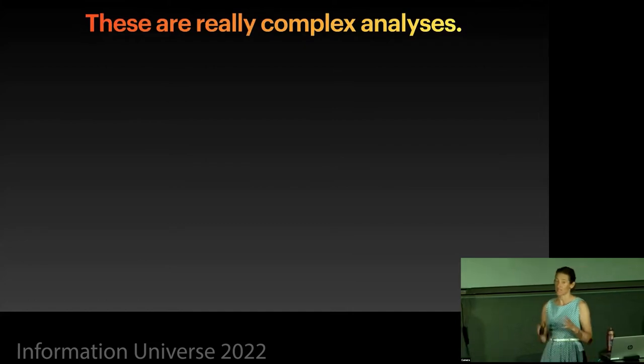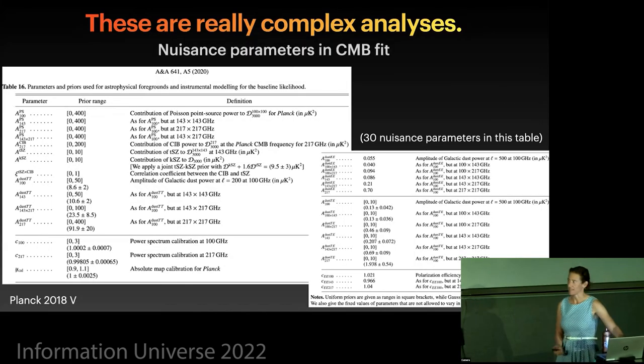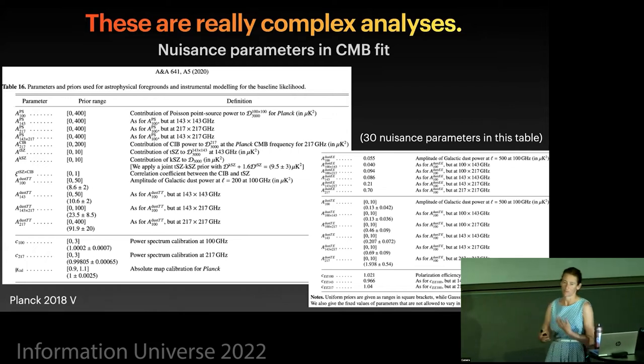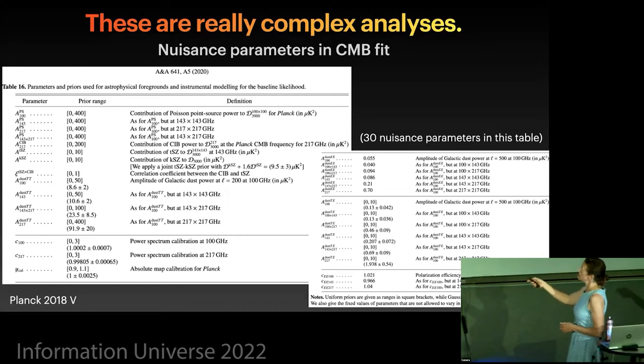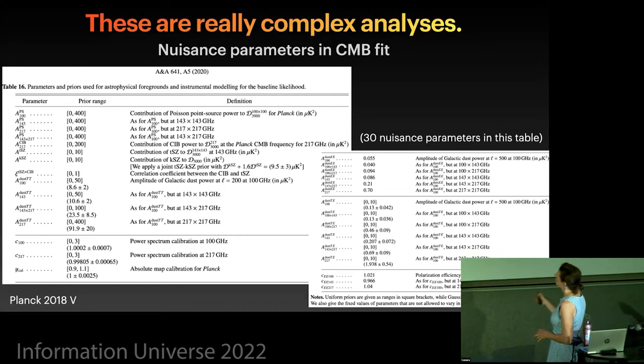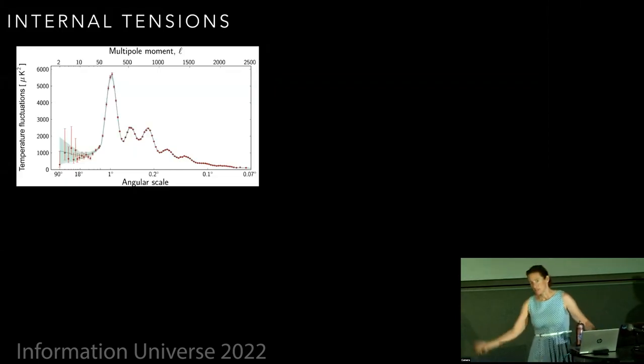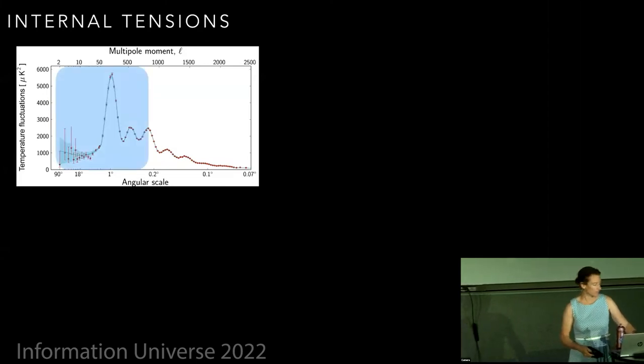So firstly, these are really complex analyses. There are a lot of moving parts. There's a lot of measurements that have to be made. And just as an example, if you look at the nuisance parameters in the cosmic microwave background fit, where you're subtracting foregrounds and dust and doing Sunyaev-Zeldovich effects things. There's a lot of free parameters in that fit. And, you know, it's a really complex measurement, basically. There's also hints of internal tensions in the data. And while this is not necessarily something to worry about, you can see that there's a tension in that when you fit the cosmic microwave background temperature power spectrum at low angular scales and at high angular scales separately.